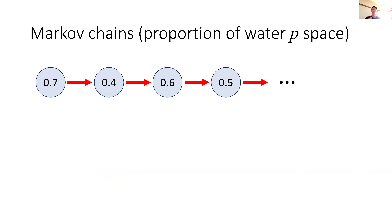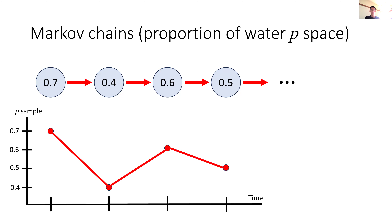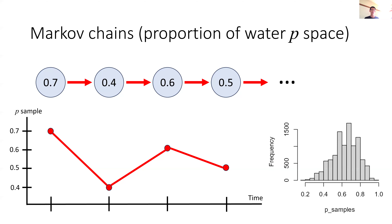Applying Markov chains to inference problems, instead of running a chain over weather values, we want our chain to take on parameter values. For our globe-tossing example with parameter p, the Markov chain might start at p = 0.7, then jump to p = 0.4, then 0.6, then 0.5. The amazing thing about MCMC methods is that if we design the jumping rule between parameter values cleverly, then after running the chain for a long time, we end up with a sample of parameter values that are in proportion to their true posterior probabilities.